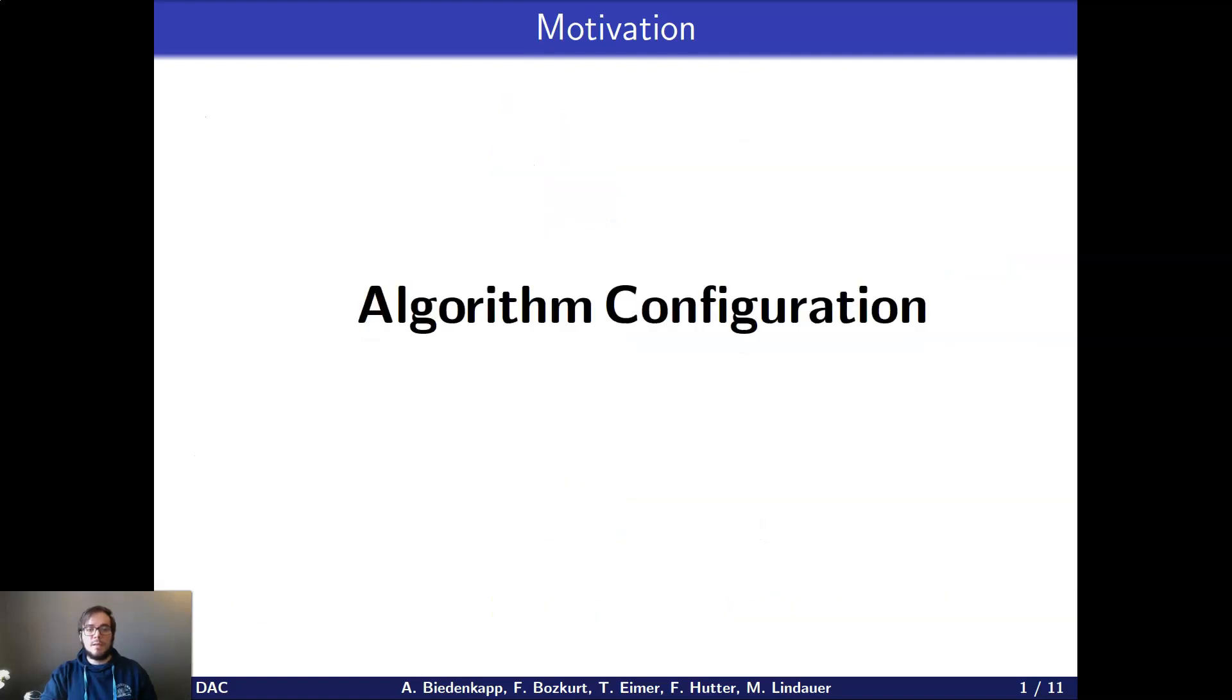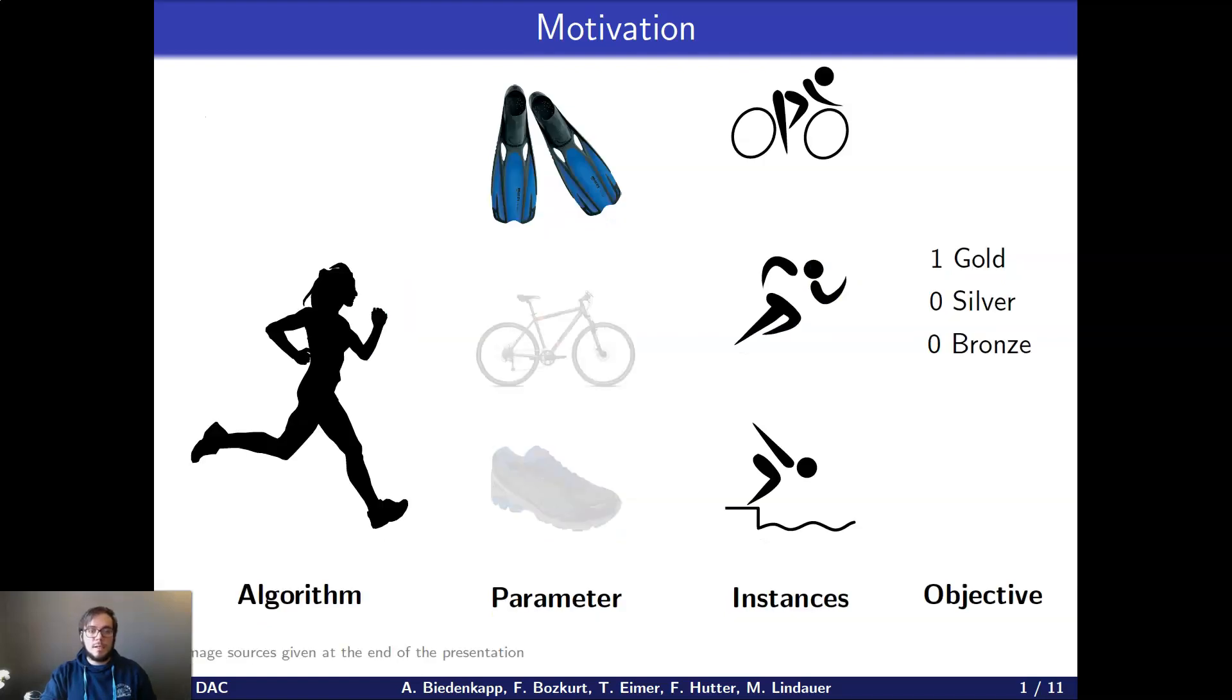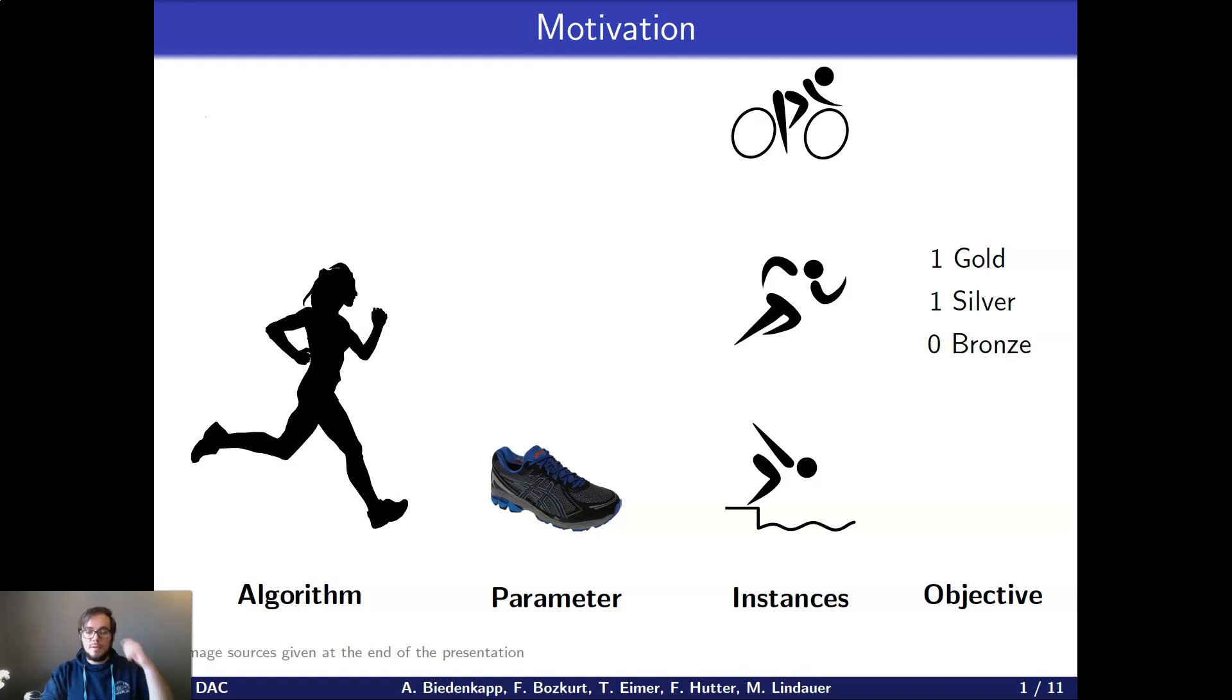If we use something like algorithm configuration where we treat the algorithm as a black box, what we would do is just trial different parameter configurations and see how that influences the objective. In the end, we would stick with the configuration that gave us the best objective value and always apply it to all instances that we will come across. But you can see quickly from the example, this is not always optimal to do.